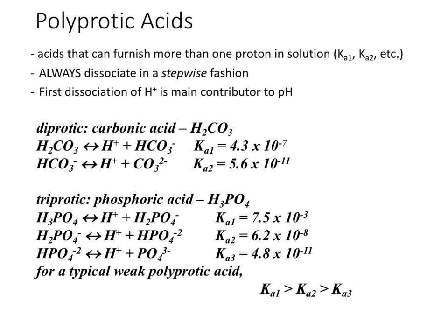An example of a diprotic acid is carbonic acid, produced when CO₂ is dissolved in water. Carbonic acid breaks down into two species, and that species can then act as an acid itself and break down further. Notice the difference in Ka values for each successive ionization — the first Ka is much larger than the second, which is why the first dissociation is the main contributor to pH, producing the significant quantity of H⁺ in solution.